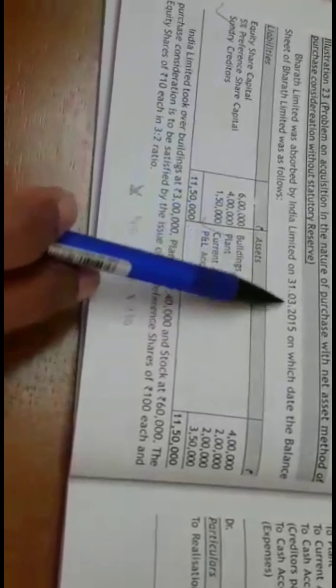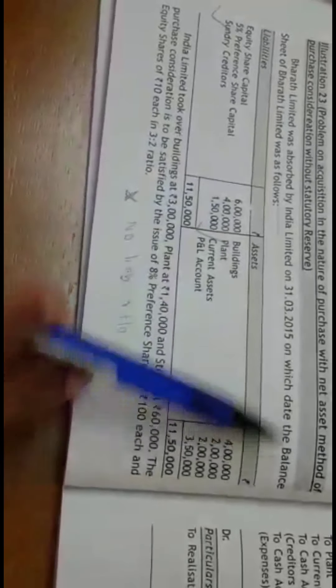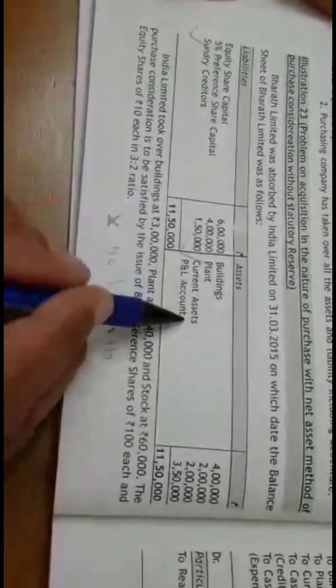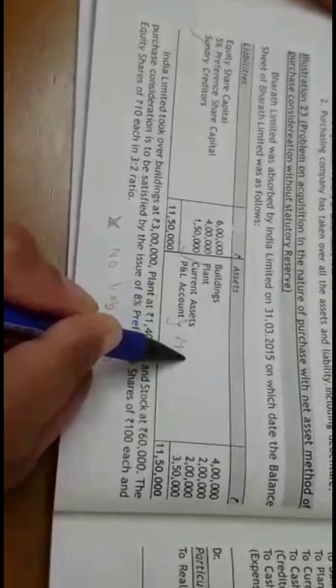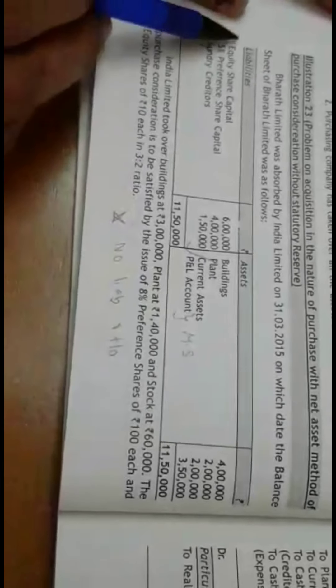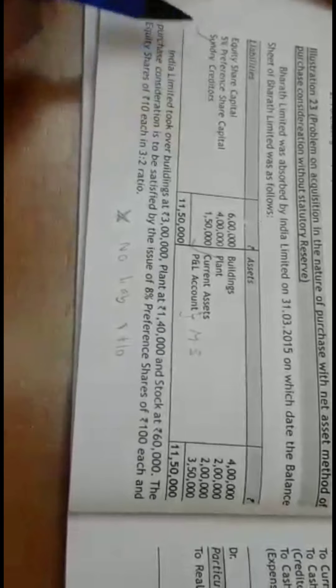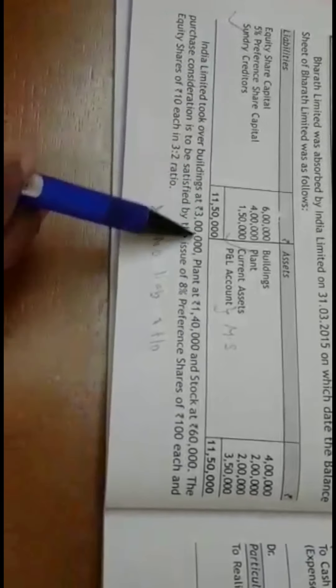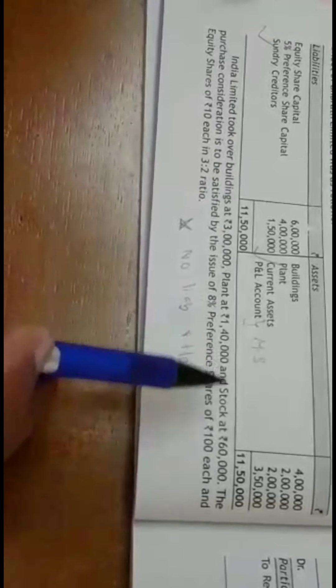Now I will be discussing the 23rd problem. Bharat Limited was absorbed by India Limited on 31st March 2015, on which date the balance sheet of Bharat Limited was as follows: building, plant, current assets, profit and loss account, miscellaneous expenditure transferred to shareholder's account, equity share capital, 5% preference share capital, and sundry creditors.